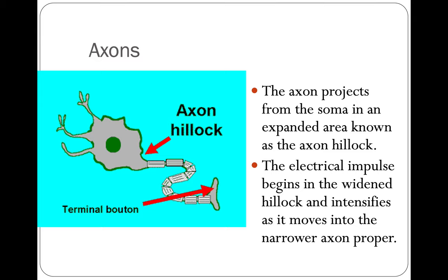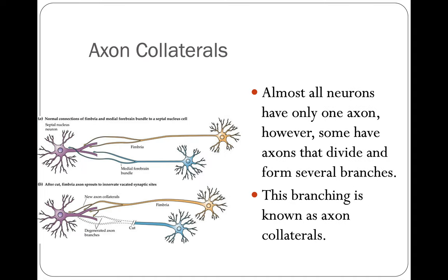The axon projects from the soma in an expanded area known as the axon hillock. The electrical impulse begins in the widened hillock and intensifies as it moves into the narrower axon proper, then goes down to the axon terminal or terminal button. Almost all neurons have only one axon; however, some have axons that divide and form several different branches, known as axon collaterals.